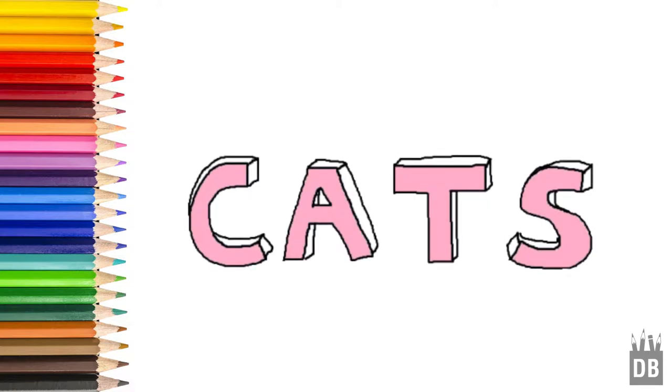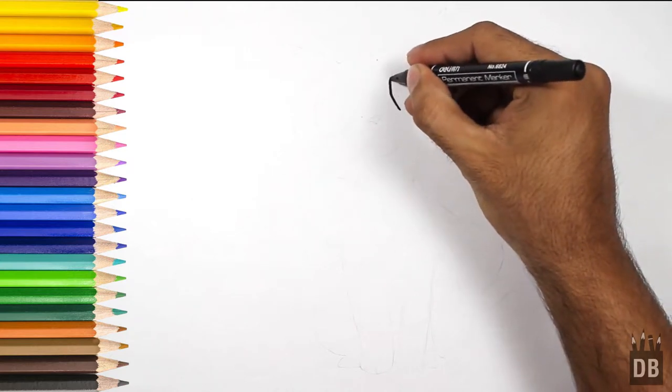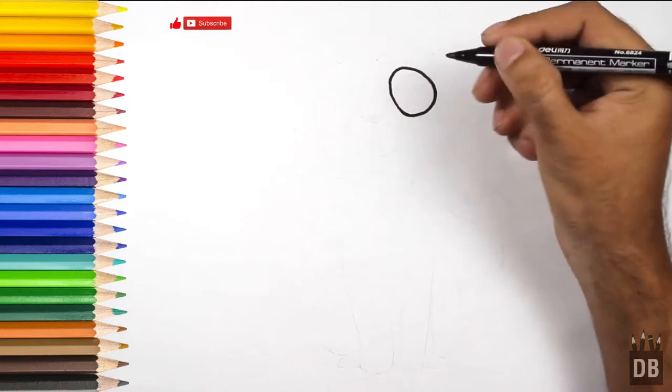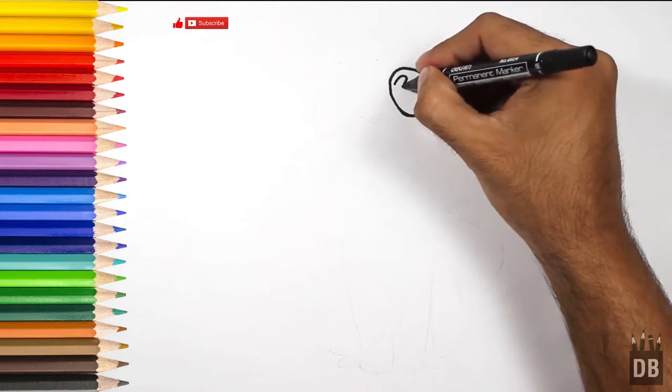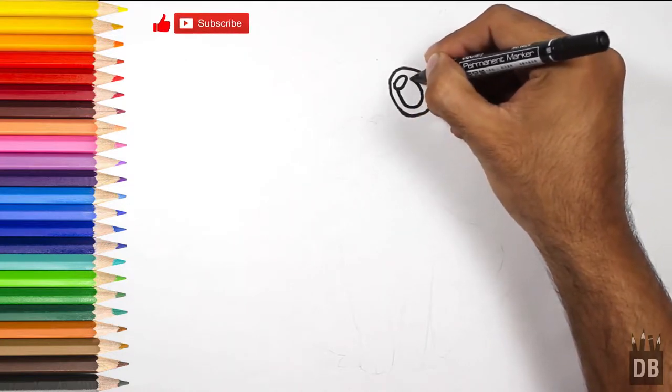Welcome to Drawing Book Studio and today we are going to make a cute cat. Let's draw. Let's start from the eyes, big eyes, shiny eyes, oval shape. We are going to make the shine and the black part.